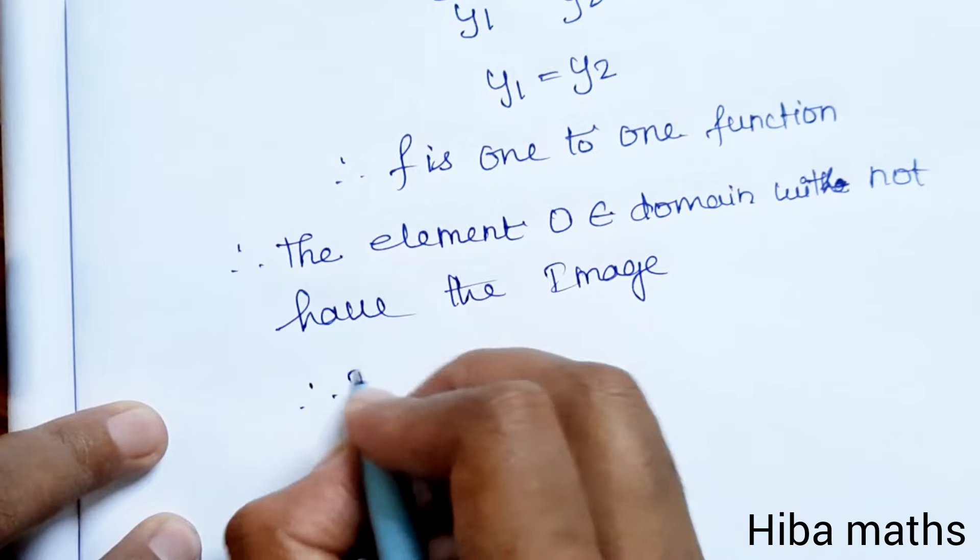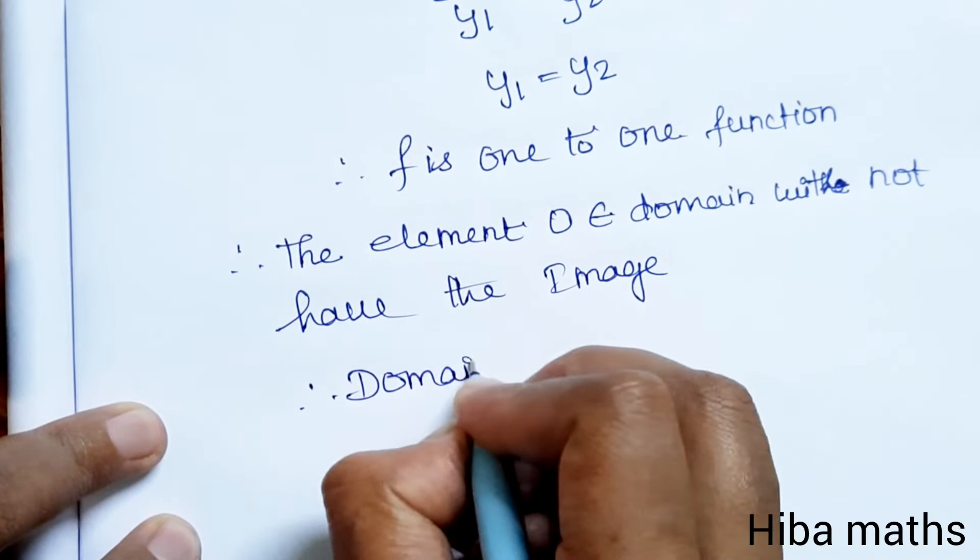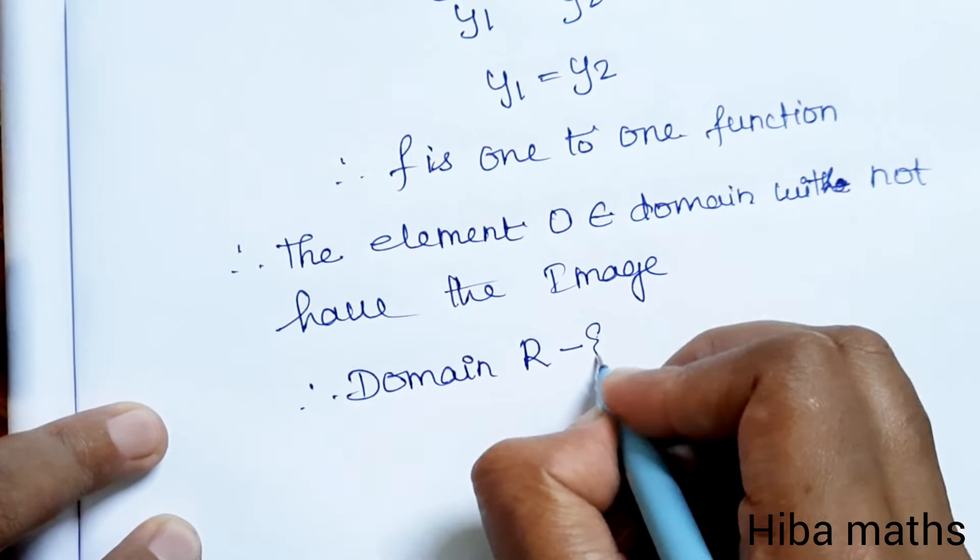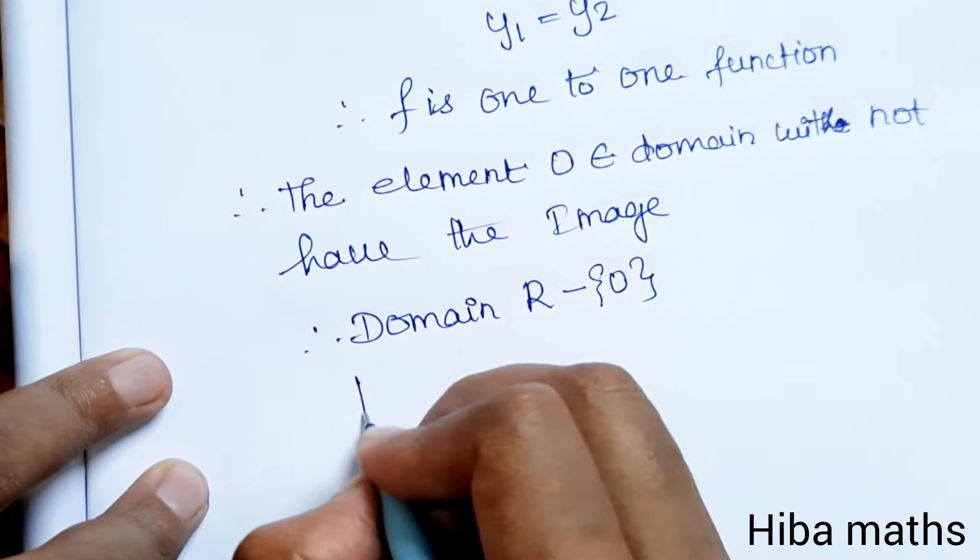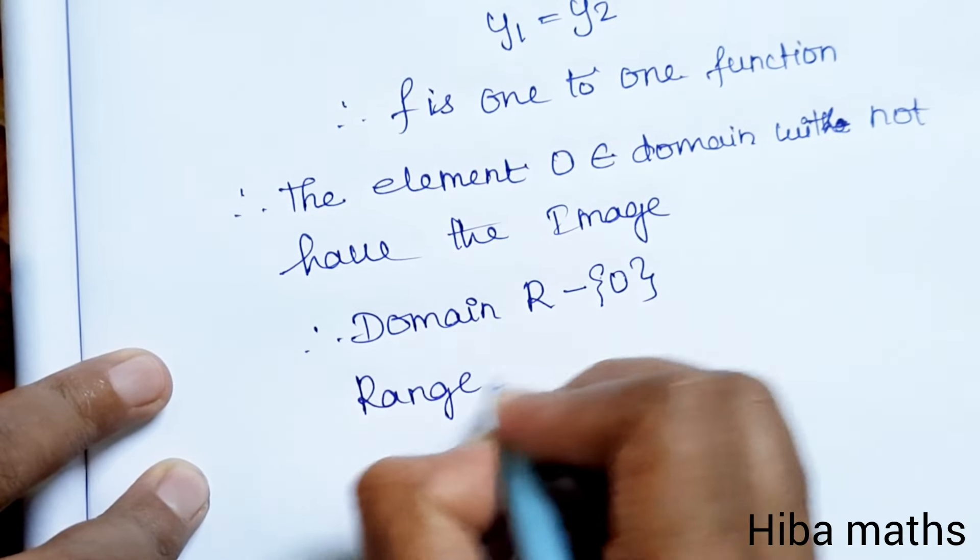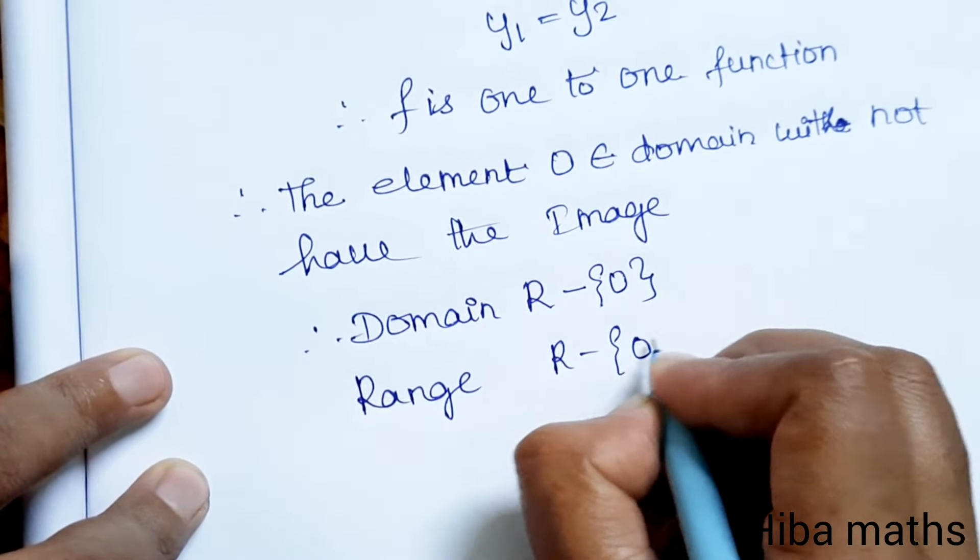Therefore, the domain is R minus {0}, meaning all real numbers except 0. Similarly, the range is also R minus {0}.